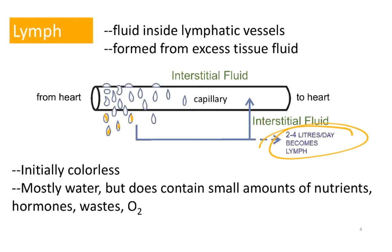Lymph is initially colorless when it's first absorbed, but eventually does become white, and that's because of the addition of white blood cells as the lymph moves through lymphatic organs.